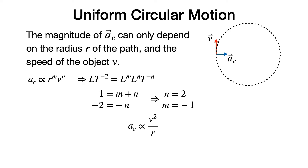We say it's proportional because there may be some numerical constant, and dimensional analysis cannot determine what that constant is. Before we figure that out, let's look at a couple of other useful quantities.